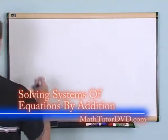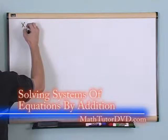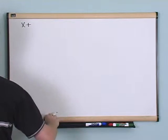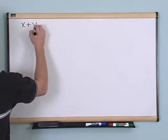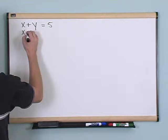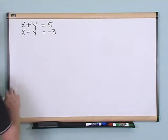Let's say you have a system of equations that looks like x plus y equals 5, and also x minus y equals negative 3, and we want to solve this system of equations.